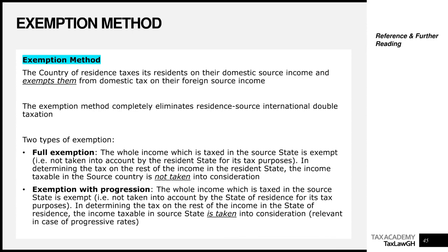Under the exemption with progression method, the income taxed in the source or foreign state is still exempt — i.e., not taken into account by the state of residence — however, in determining the tax on the rest of the income in the state of residence, the income taxable in the source state will be taken into account. This is relevant in the case of progressive tax rates. So under exemption with progression, we still exempt you, but when determining your effective tax rate or effective tax payable locally, the foreign income may be factored in. We will have a detailed video on this to explain further.